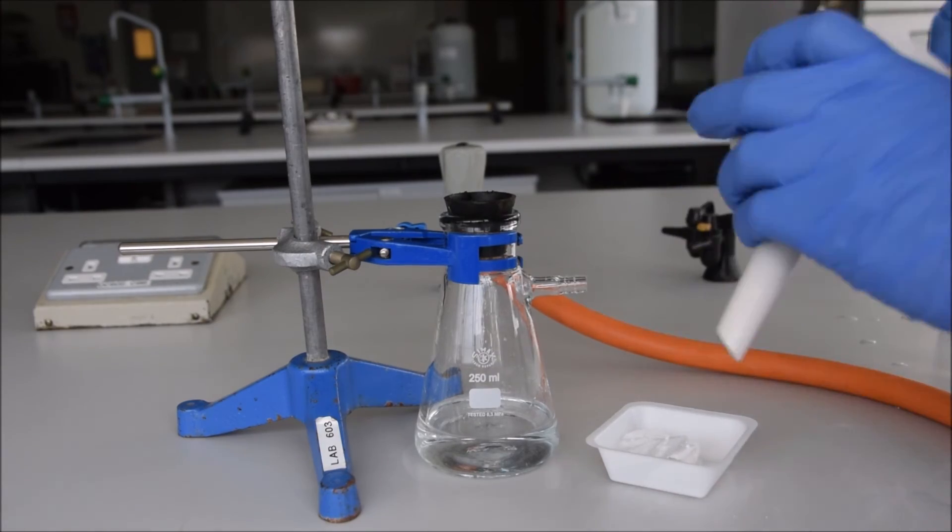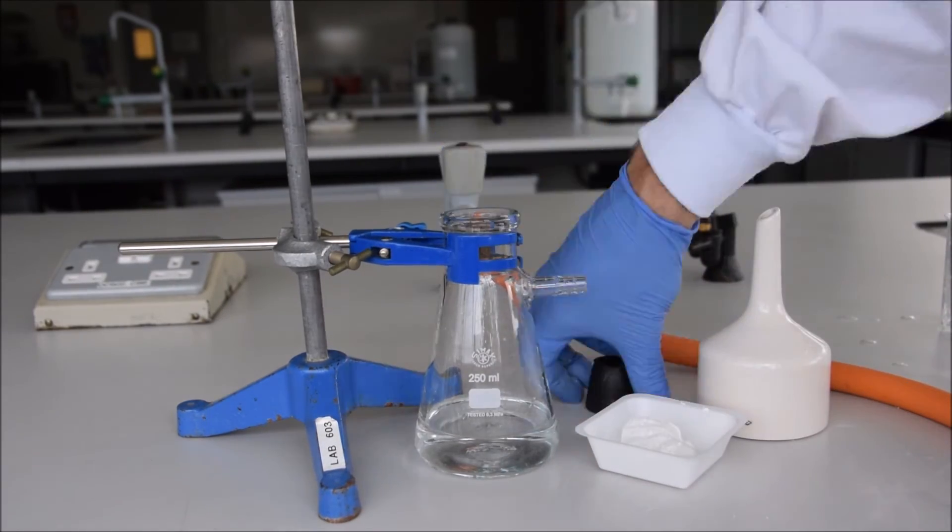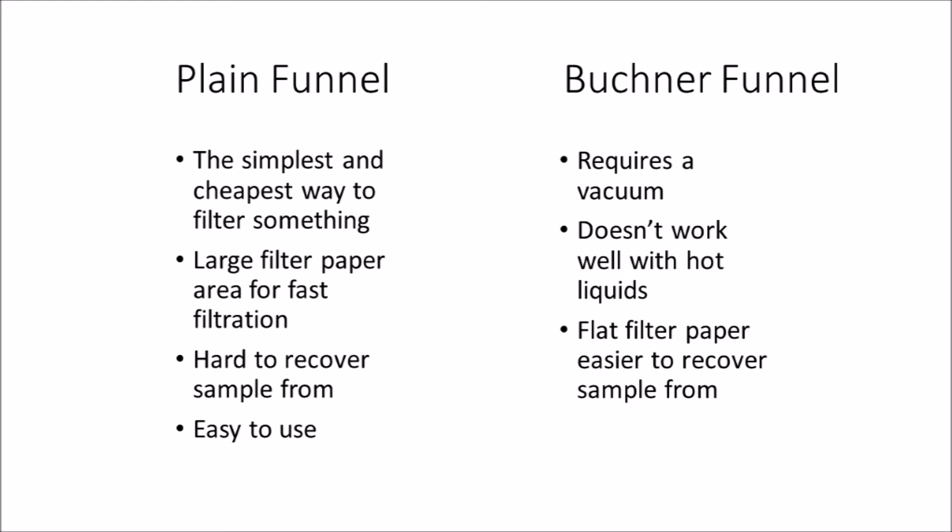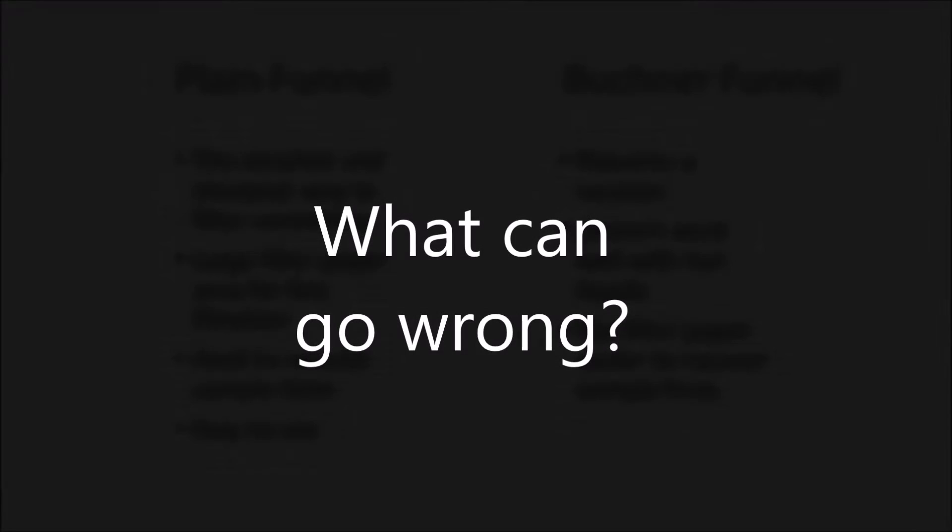You can see then I took out my sample, I took out the filter paper, and I disassembled it all. So there are two of the possible funnels—plain funnels and Buchner funnels—and you can pause to read a little bit more about them now. Hirsch funnels are just like Buchner funnels only smaller, so you'd have no problem using those. Let's have a quick look at what can go wrong.